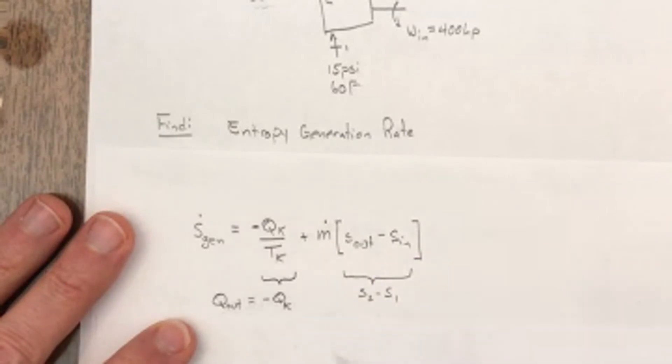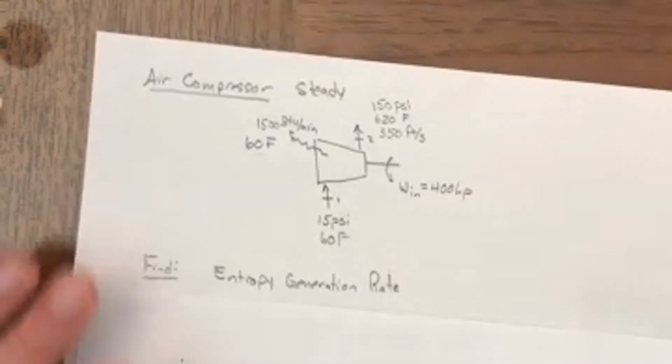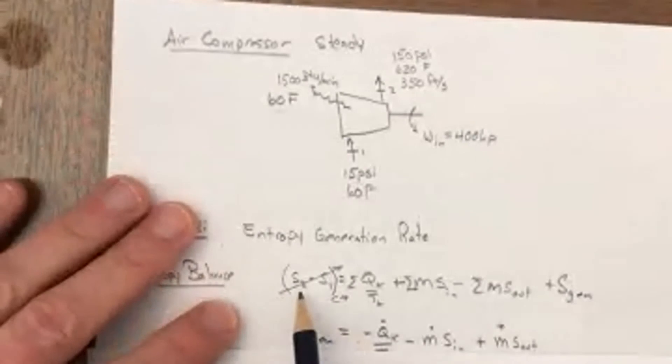And that's not to be confused with this S2 minus S1. This is the control volume, the change in time, and these are the ins and outs.